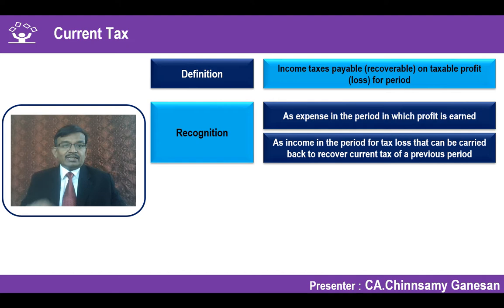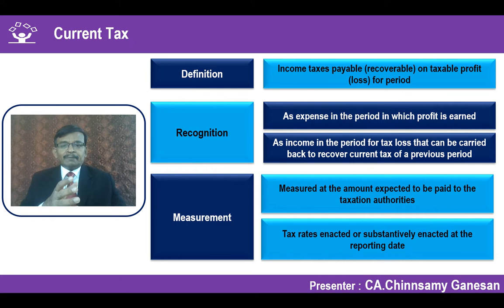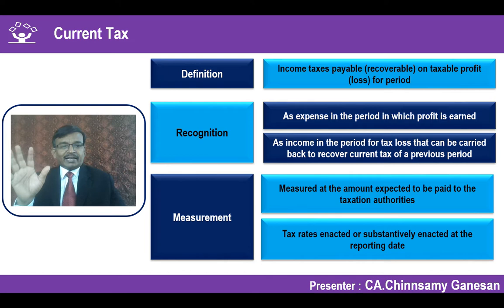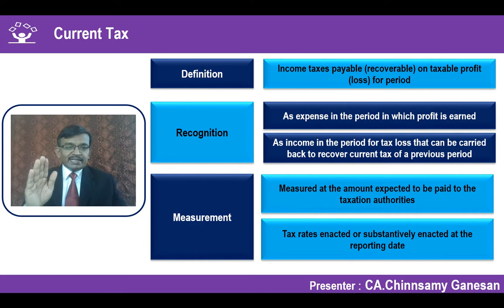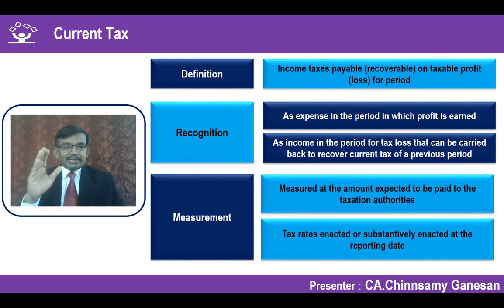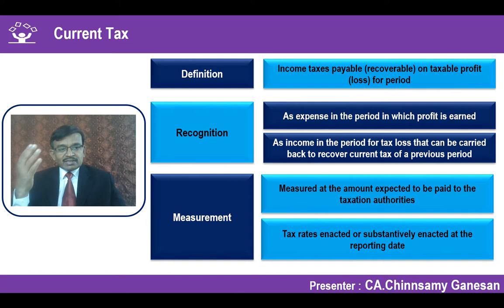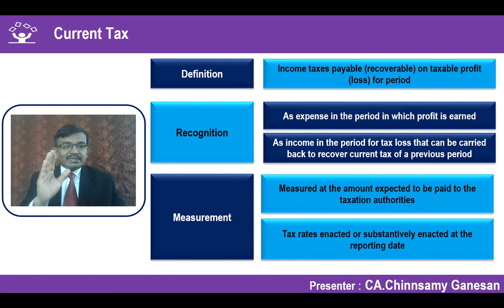For measurement of current tax, you identify the amount expected to be paid to the taxation authorities — which is the actual tax payable in accordance with the computation of total income. Sometimes this may be based on normal rates of tax, sometimes on minimum alternate tax, and sometimes different items of income may be taxed at special rates. All those aspects are considered to arrive at the total amount payable, which is accounted as expenditure with a corresponding provision in the books.